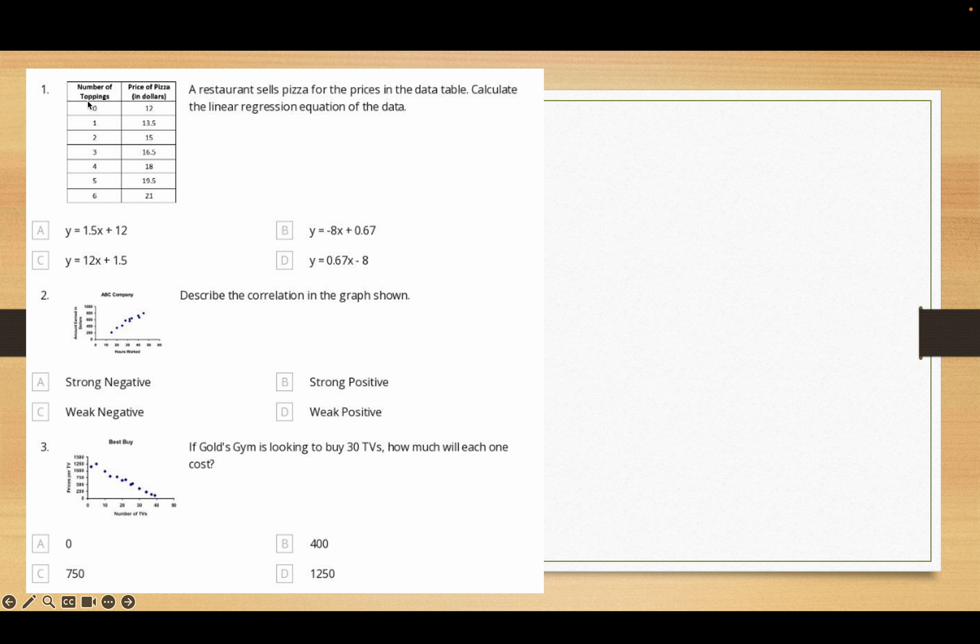The first one, we input these values into our calculator in L1. We go 0, 1, 2, 2, 3, 4, 5, 6, and then we put 12, 13.5 and so on in for L2. Then we go down to linear regression, the fourth one will say y equals 1.5x plus 12. It'll say a equals 1.5 and b equals 12, and you substitute them in.